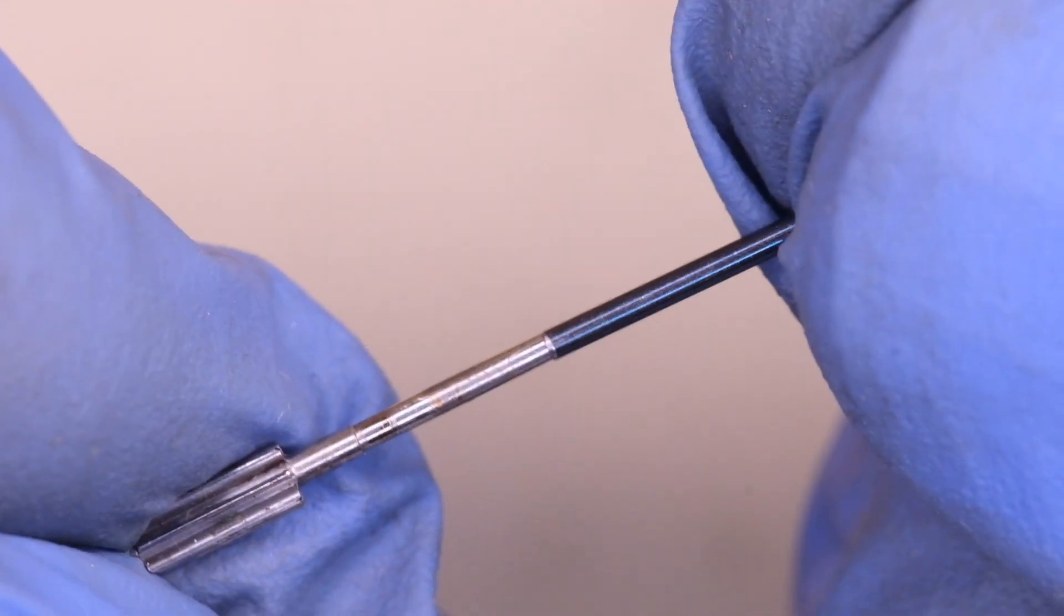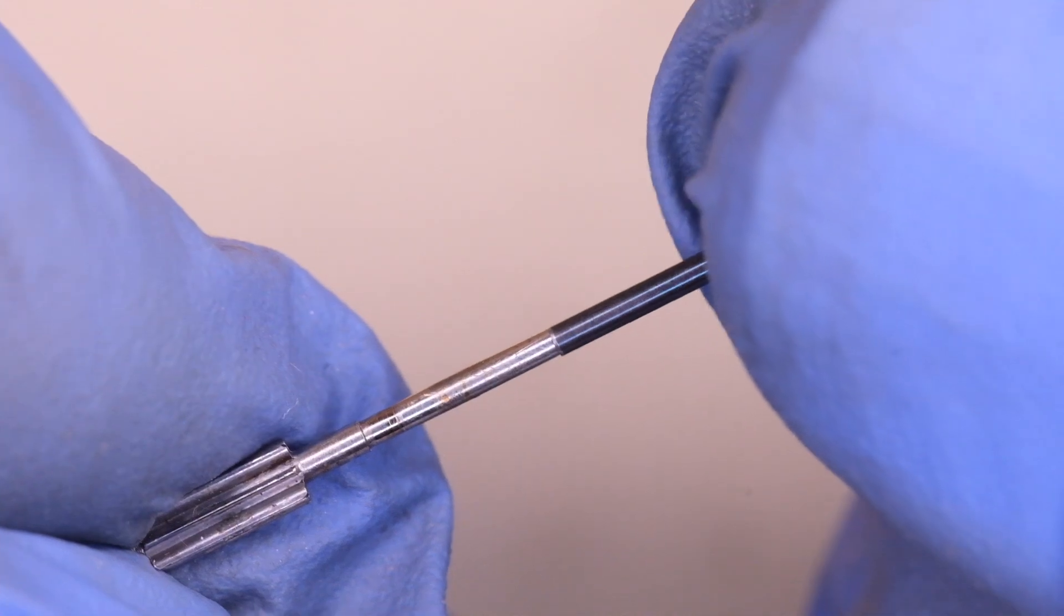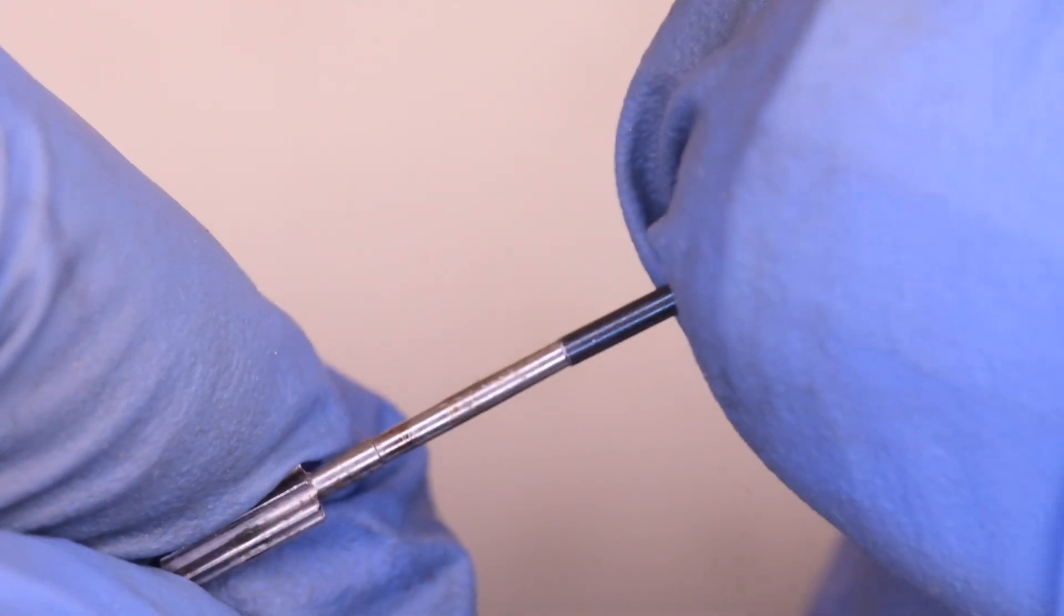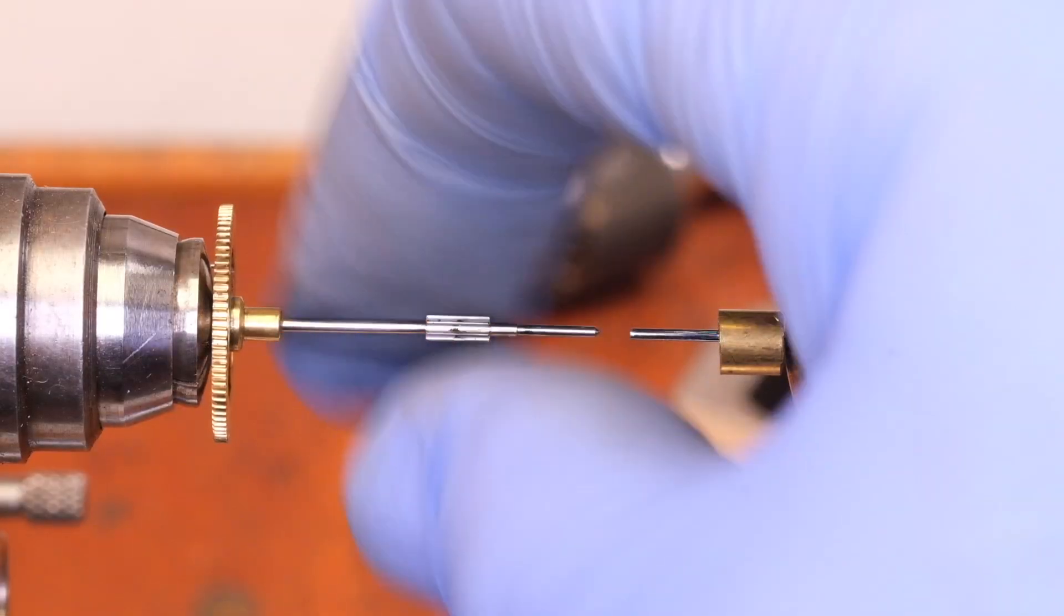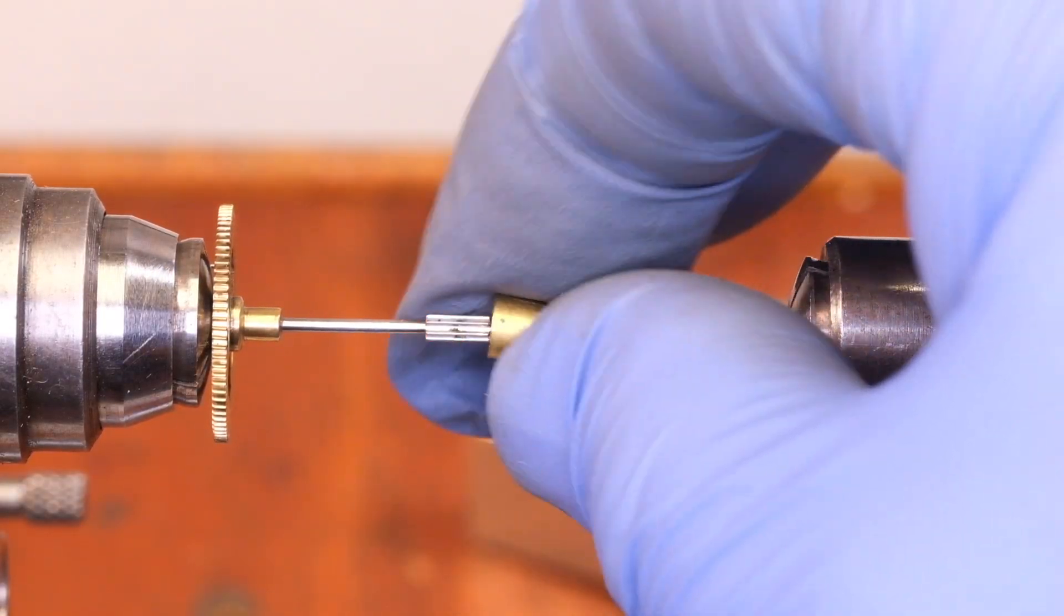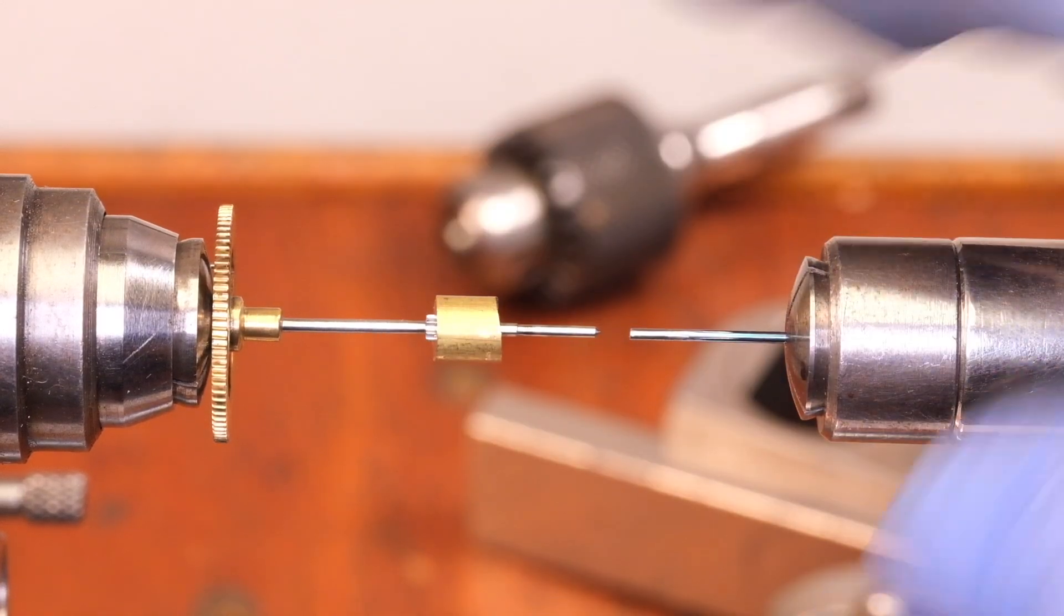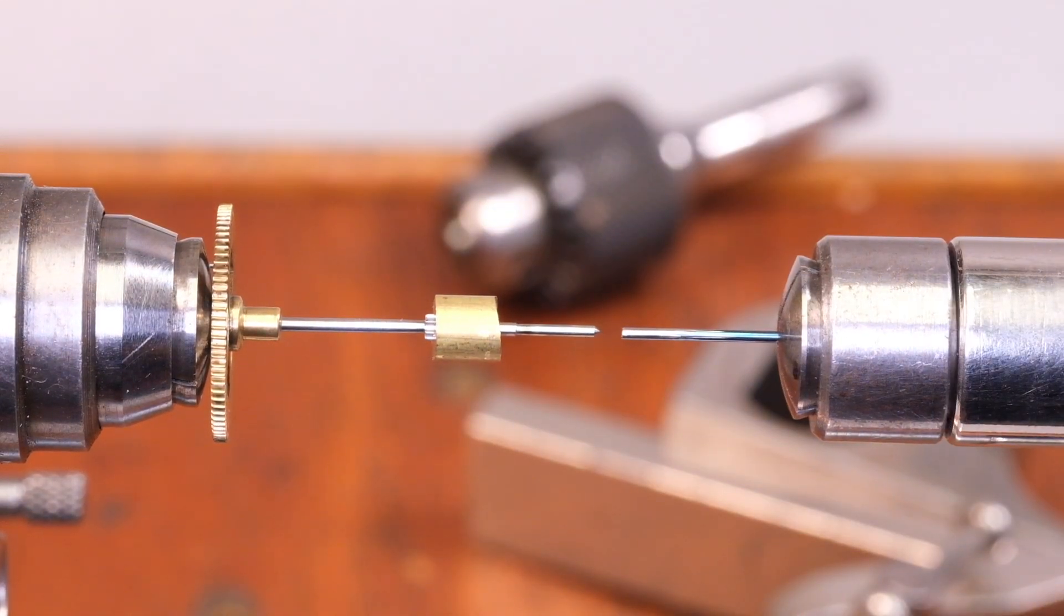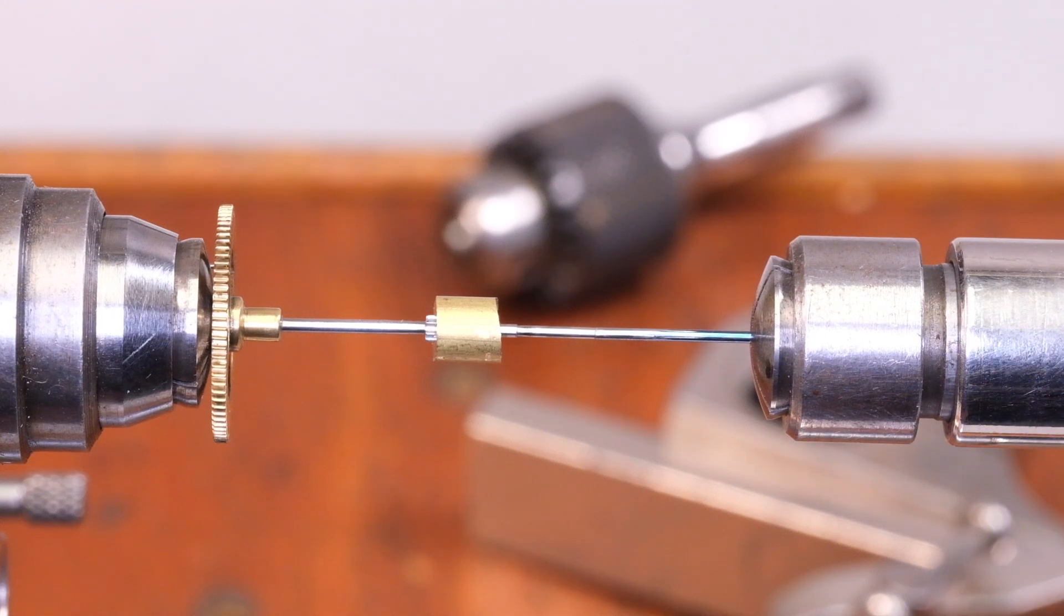So now we have our two components. We have the arbor with a cone on the end and we have the blued pivot steel with a cone in the end, and they are going to fit together quite nicely. Now I'm going to use my watchmakers lathe to actually hold the two components in line. It seemed like a reasonable thing to do at the time.